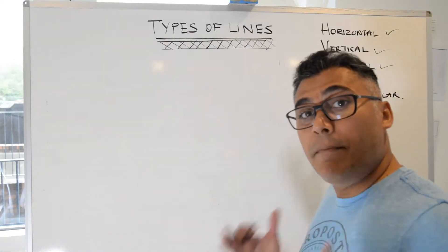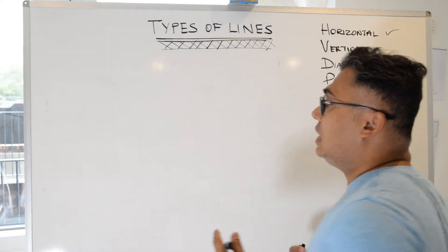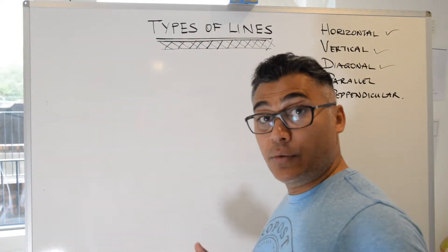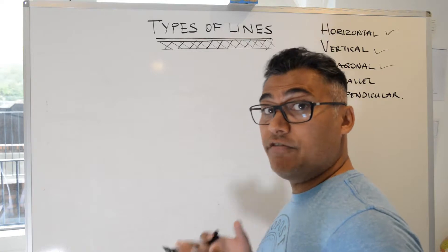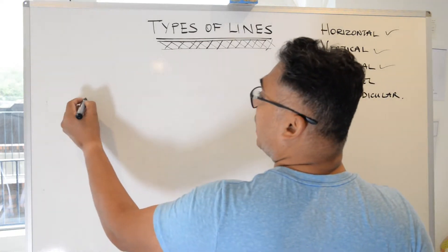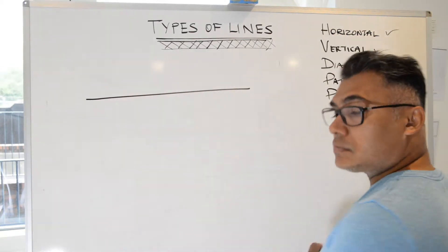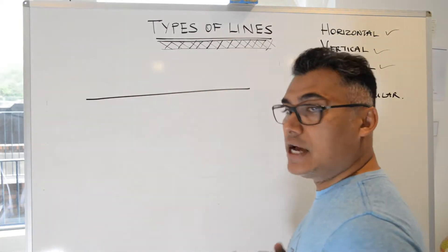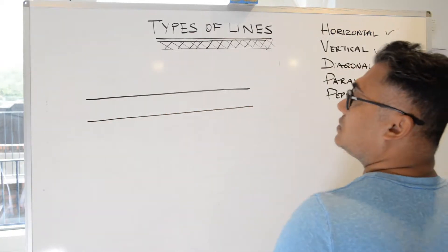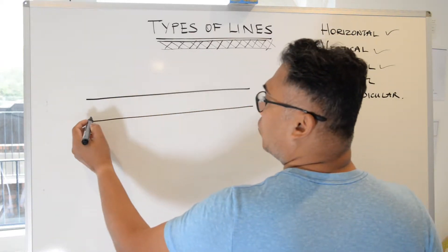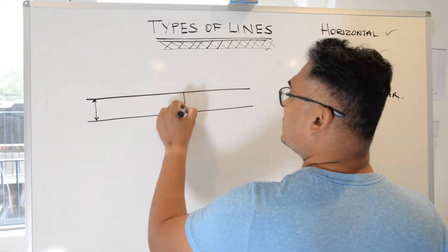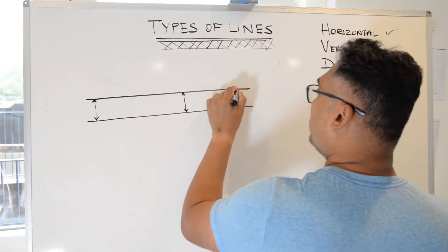Then we have parallel lines. Parallel lines are lines that are equidistant from each other — they follow each other and they never meet. For example, if I have a horizontal line and I want to draw a parallel line to it, it can be any distance away, as long as they are equidistant — the same distance apart.